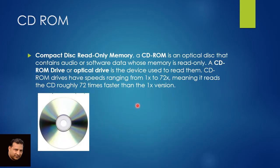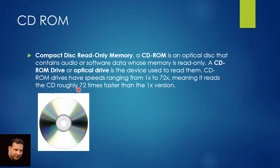Now we have CD-ROM — Compact Disk Read-Only Memory — so it means you can only read data inside this CD-ROM; you cannot write to it. A CD-ROM is an optical disk, meaning light is used to read data from it. It contains audio or software data whose memory is read-only. The CD-ROM drive — you might have seen a drive in your laptop on the right-hand side — is also known as an optical drive, which we use to read CDs or DVDs. CD-ROM drives have speeds ranging from 1x to 72x, meaning it reads roughly 72 times faster than 1x.